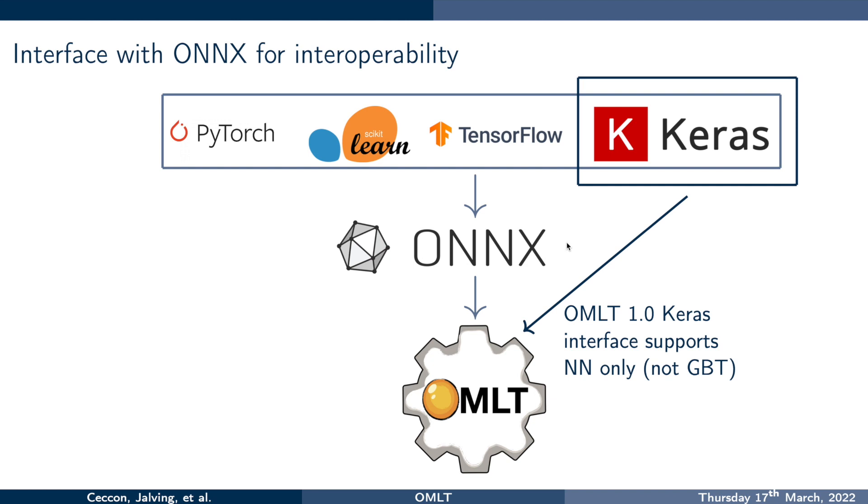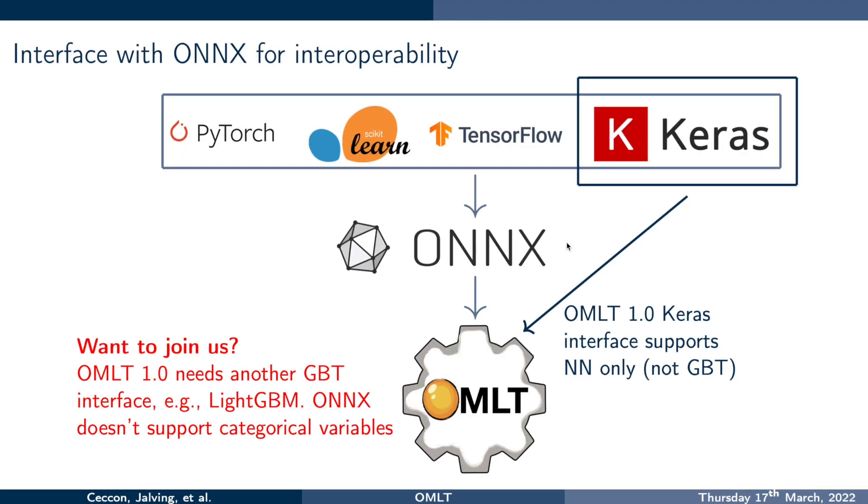Omelette does also have a direct from Keras interface. This interface is supporting neural networks only, not gradient boosted trees. And if you're getting excited about Omelette, if you would like to join us, one of the many things we do need to do is that we do need another gradient boosted tree interface. So for instance, light GBM, the problem with ONNX is it's not supporting categorical variables, something like red, green, blue. ONNX is only going to represent continuous items like a wavelength of light or something like this. And the problem with this is that gradient boosted trees work really well with categorical variables. So that's one of our very many to-dos. Find some of the others either on our GitHub discussion forum or on our GitHub issue list.